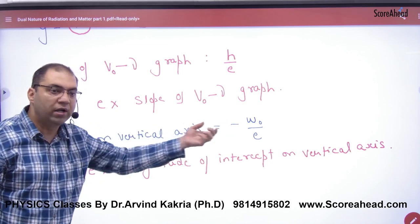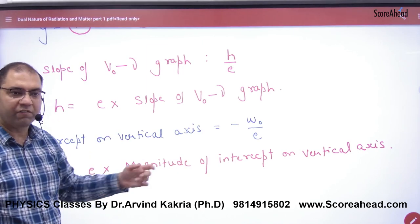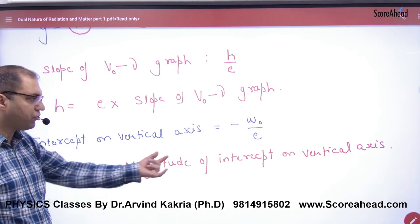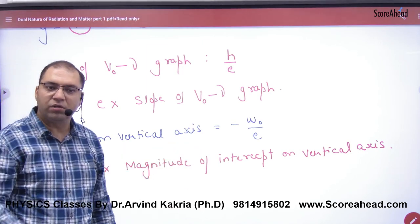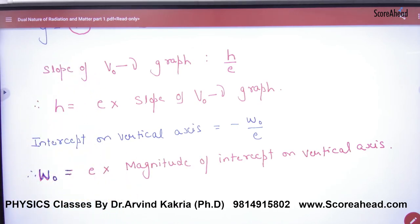Taking the magnitude, removing the minus sign, it will be E times the intercept magnitude, because work function is positive. How work function and slope are determined will be clear when it comes up in questions, and we will see in numerical problems.